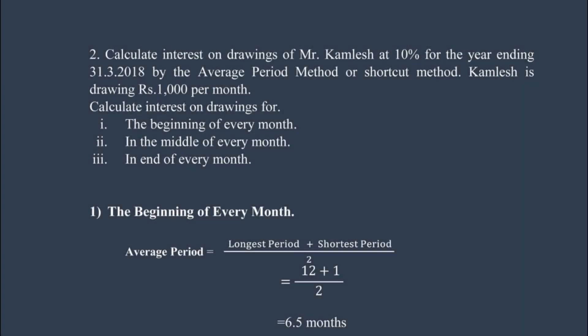Hey, welcome back to the series of Accountancy Chapter 2: Accounting for Partnership Basic Concepts. In this video we are solving a sum on the average period method or shortcut method. Calculate interest on drawings of Mr. Kamlesh at 10 percent for the year ending 31st March 2018 by the average period method. Kamlesh is drawing 1000 rupees per month.